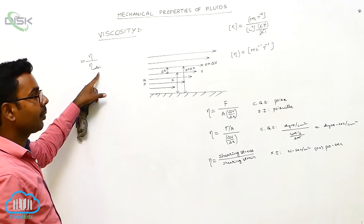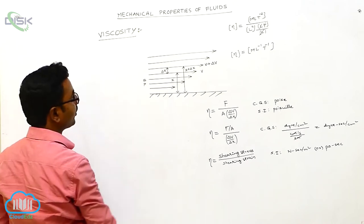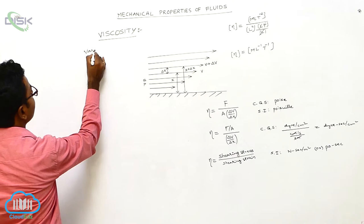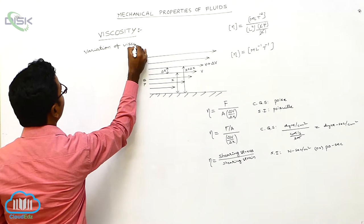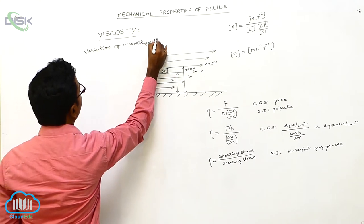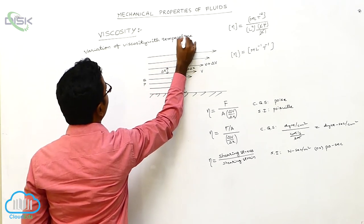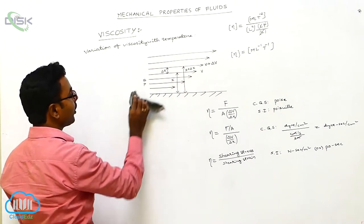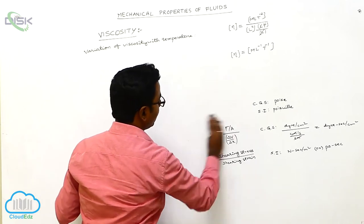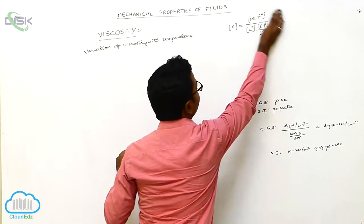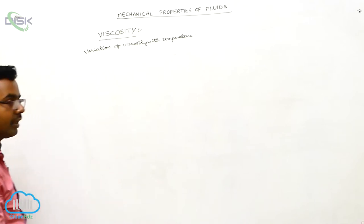We discussed relative viscosity. Now we discuss the variation of viscosity with temperature. Variation of viscosity with temperature is different for liquids and gases.